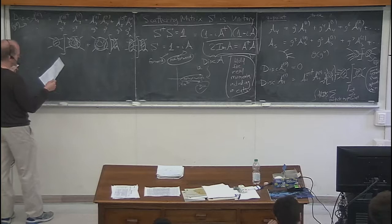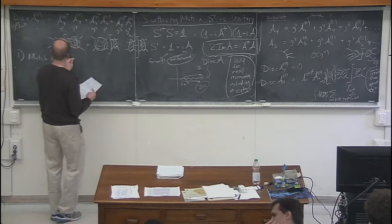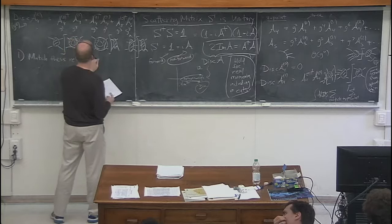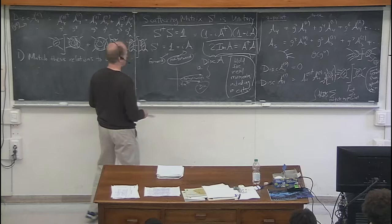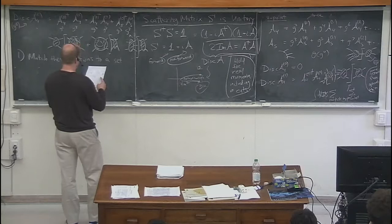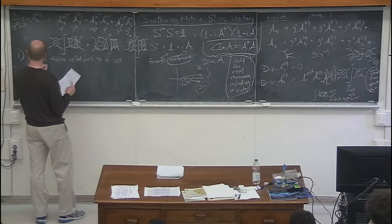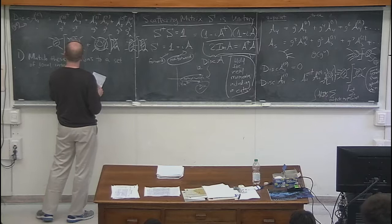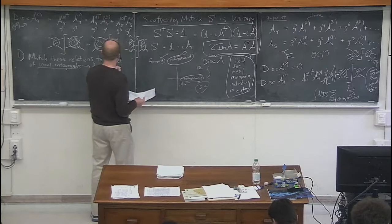The idea is to use these relations to make perturbative calculations more efficient by matching them. We don't really want to perform all these integrals to get the discontinuity. Instead, we want to write the amplitude in a particular way involving a certain set of integrals, then take the discontinuities of that set. A local integrand is one that looks like a Feynman diagram with numerators — everything in the denominator looks like a Feynman propagator 1 over p squared.